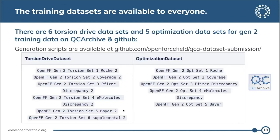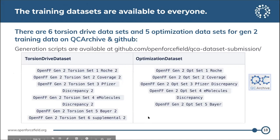These training data sets are available to everyone. There are six torsion drive data sets and five optimization data sets in QC archive. The table lists the names of all torsion and optimization data sets. All generation scripts are detailed on the QC dataset submission repository under the Open Force Field GitHub.